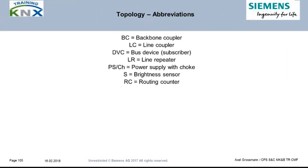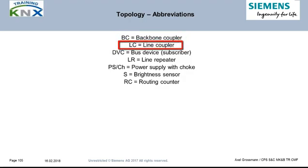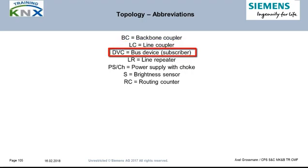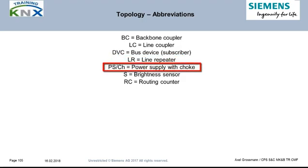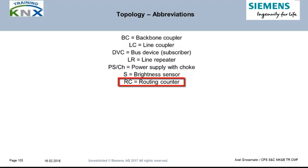Some terms and their abbreviations used in this chapter: BC equals backbone coupler, also referred to as area coupler. LC equals line coupler. DVC equals device, equal to subscriber. LR stands for line repeater. PS/CH equals power supply with integrated or attached choke. S equals brightness sensor. RC equals routing counter.